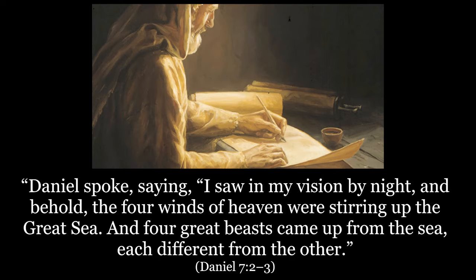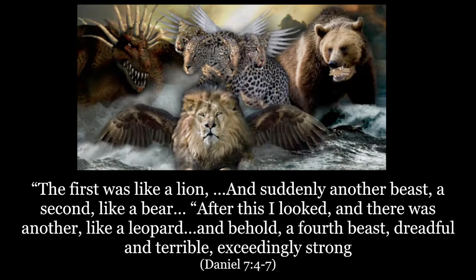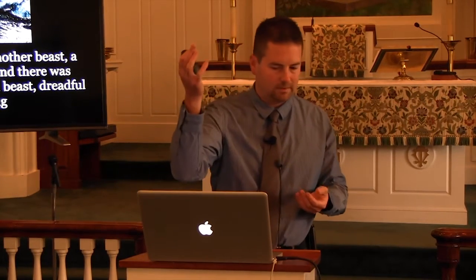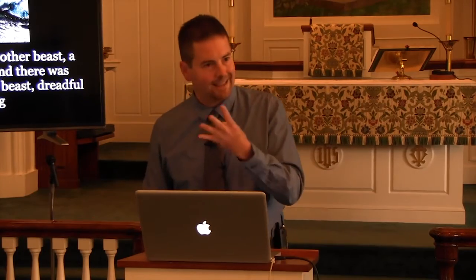In Daniel chapter 7, Daniel has a vision. He says, 'I saw in my vision by night, and behold, the four winds of heaven were stirring up the great sea.' There's that sea again — multitudes, nations, kingdoms. And four beasts came up from the sea, each different from the other. Then he describes them. The first was like a lion, and suddenly another beast, a second like a bear. And then I looked, and there was another like a leopard. And behold, a fourth beast, dreadful and terrible, exceedingly strong. So Daniel is looking into the future, seeing these kingdoms rise up.